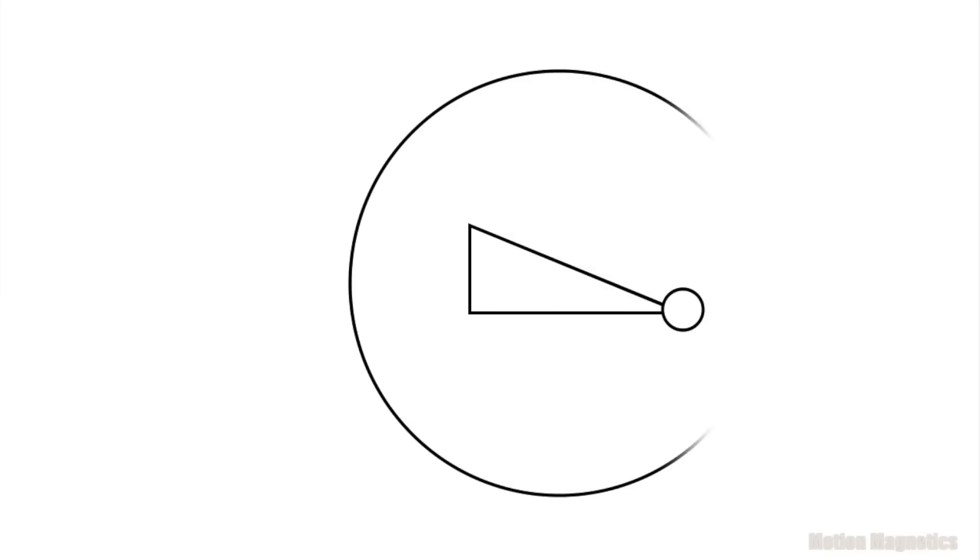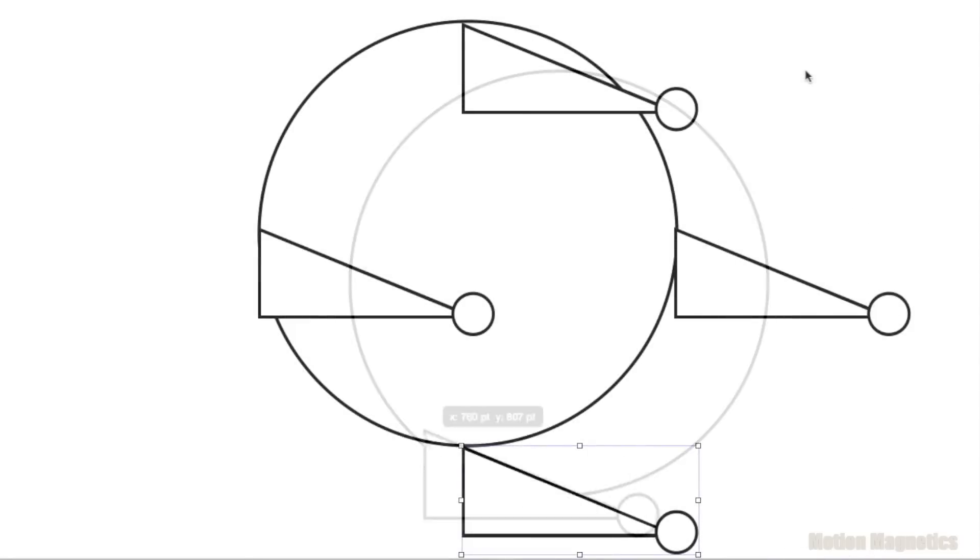I had this initial idea that if you could suspend a series of triangular objects that were weighted on one side from a wheel in such a way that they always faced the same direction, you could design a gravity wheel around it.